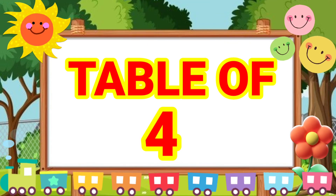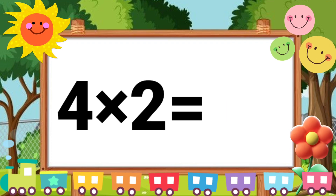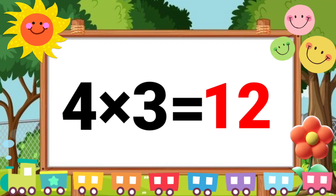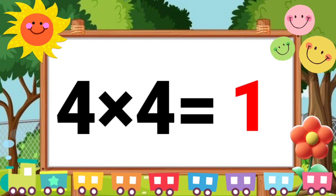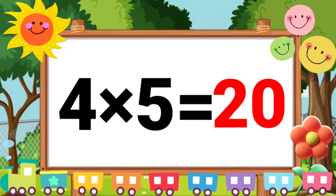Table of Four. Four ones are four. Four twos are eight. Four threes are twelve. Four fours are sixteen.